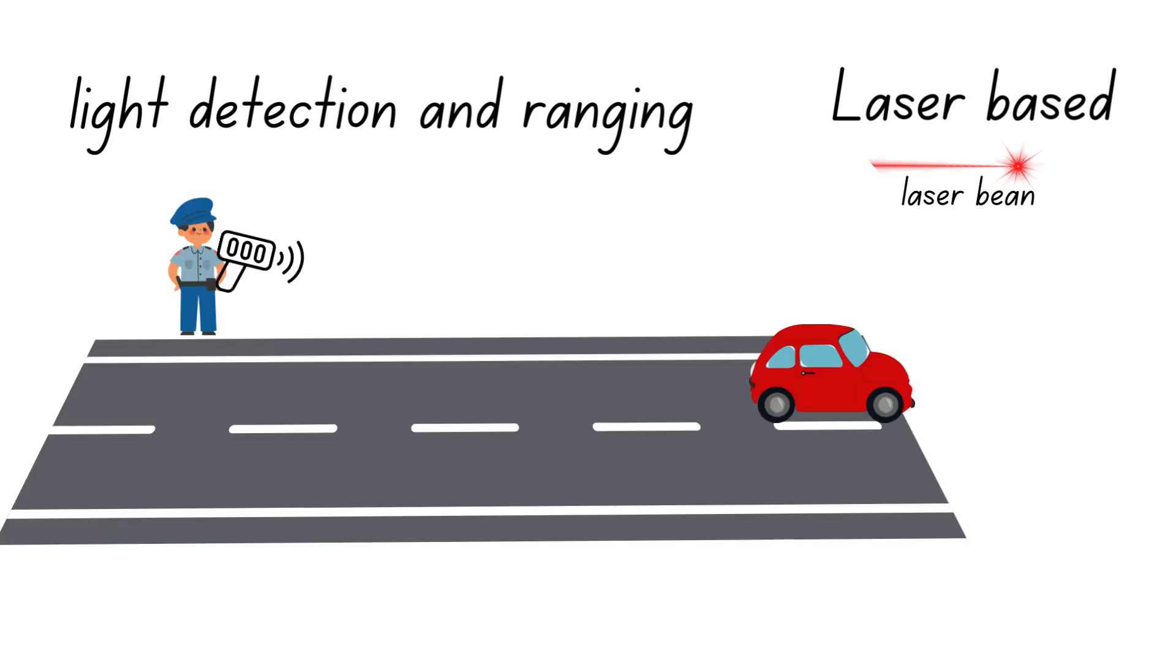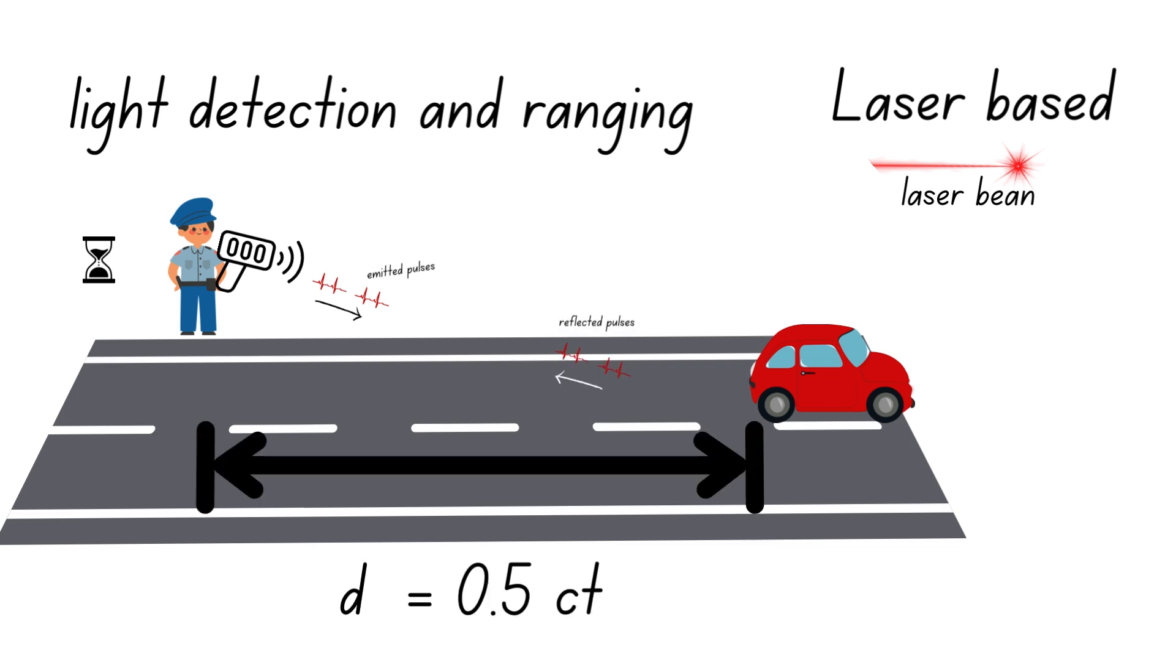A laser speed gun emits a narrow beam of light pulses at a high frequency toward the moving object. The gun then measures the time it takes for each pulse to travel to the object and back. Using this time delay, the gun determines the distance to the object.